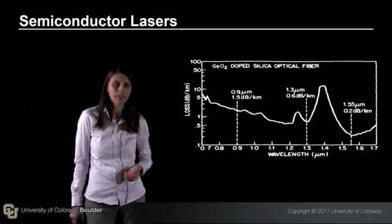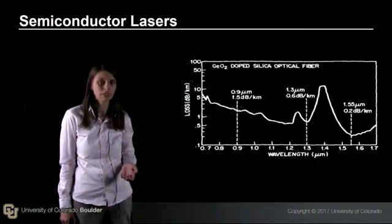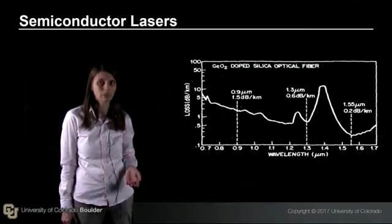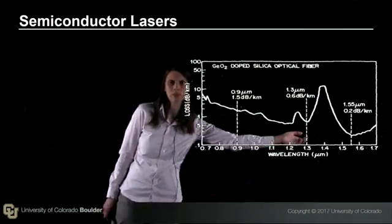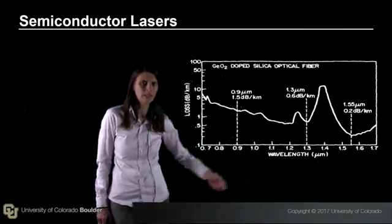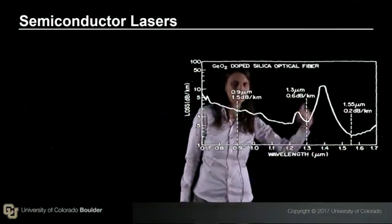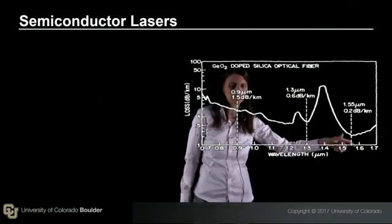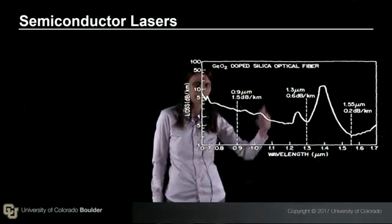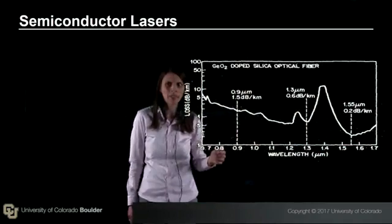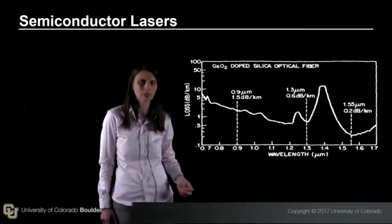One of the driving applications for semiconductor lasers is optical fiber. This plot shows loss versus wavelength. At 1.55 microns, the loss is lowest — this is where current fiber communication systems operate. At 1.3 microns, the loss is also pretty low. Initially, communication systems were made at 0.9 microns, where the loss is still reasonable.